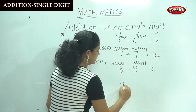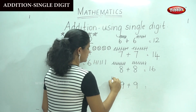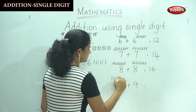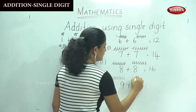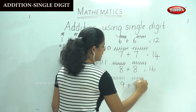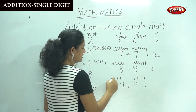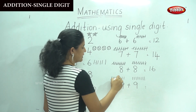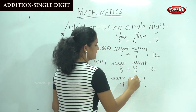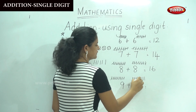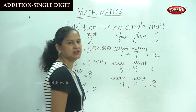The next is 9 plus 9. Drawing 9 sticks: 1, 2, 3, 4, 5, 6, 7, 8, 9 on each side. Now counting both sets of sticks together: 1, 2, 3, 4, 5, 6, 7, 8, 9, 10, 11, 12, 13, 14, 15, 16, 17, 18. So 9 plus 9 gives us number 18.